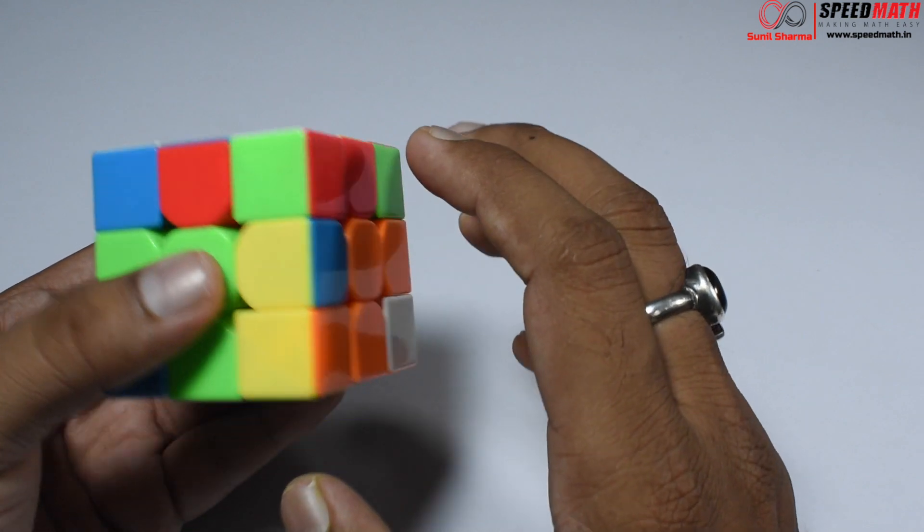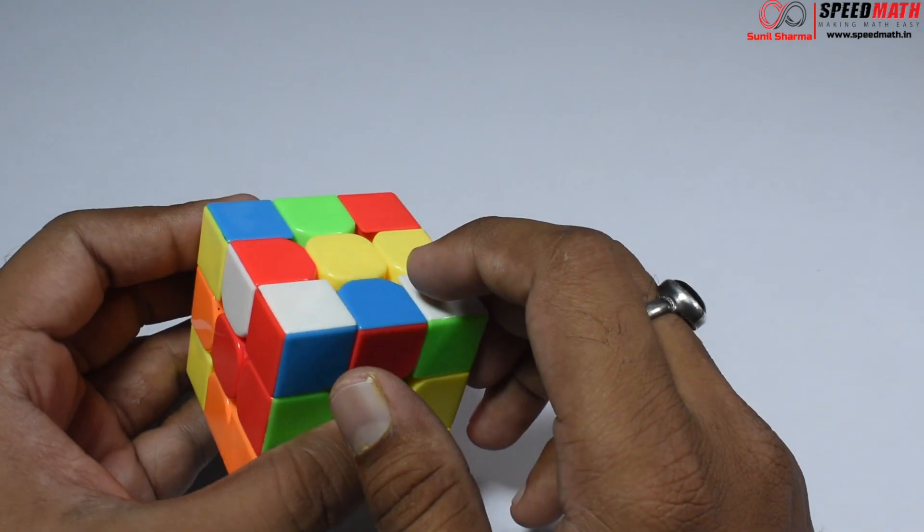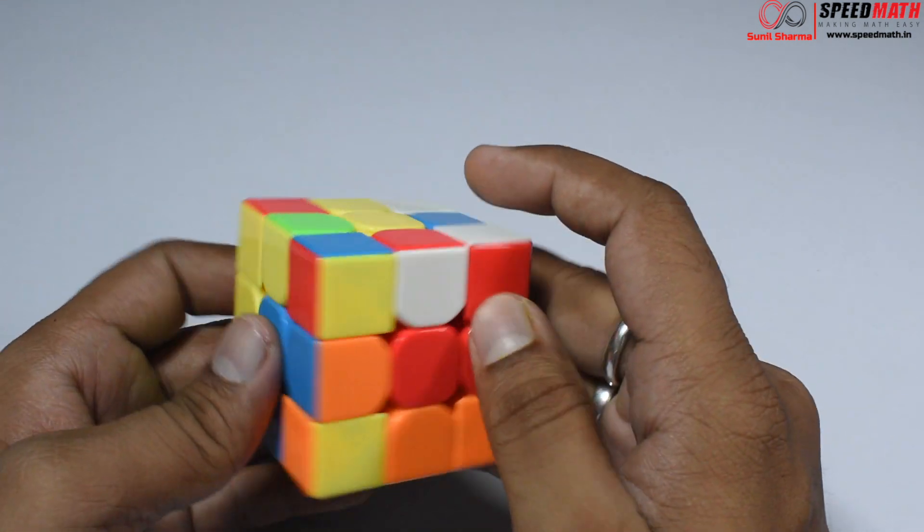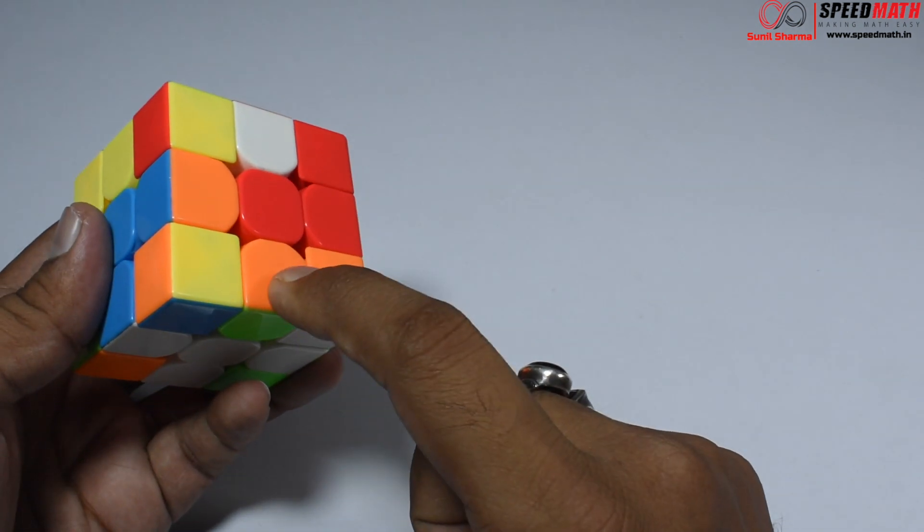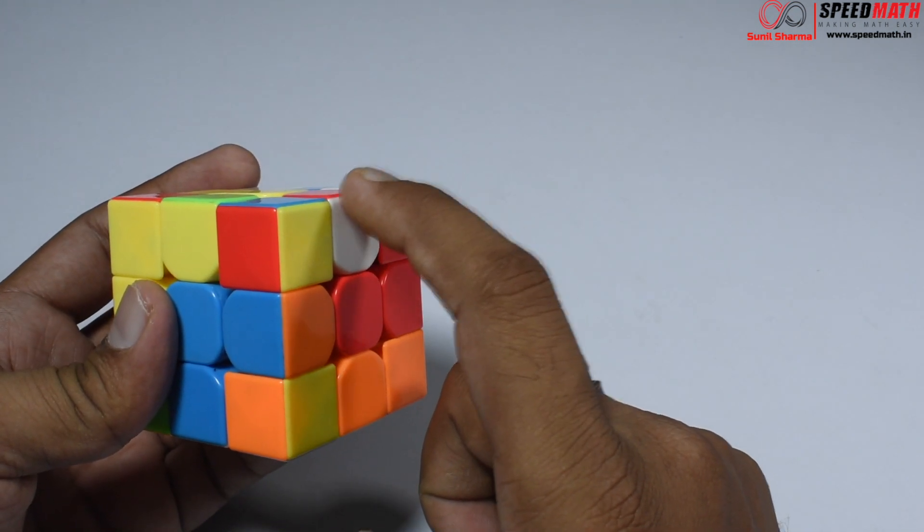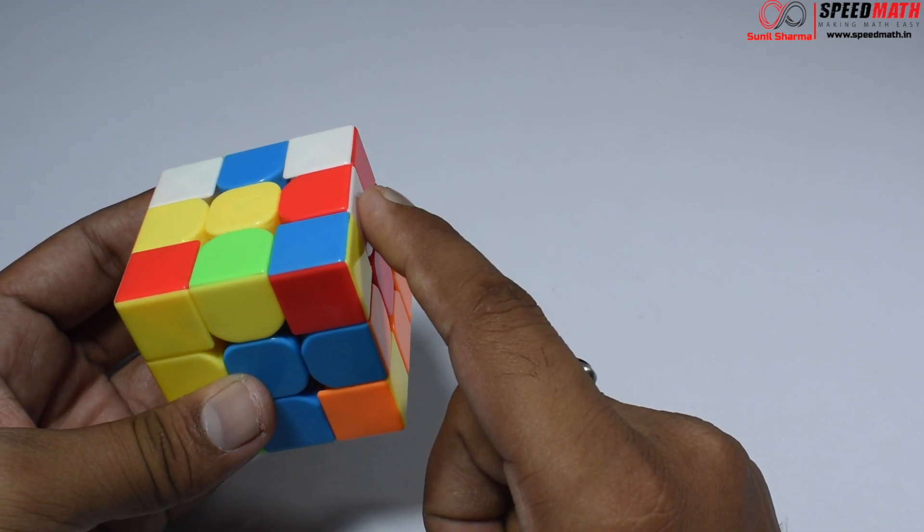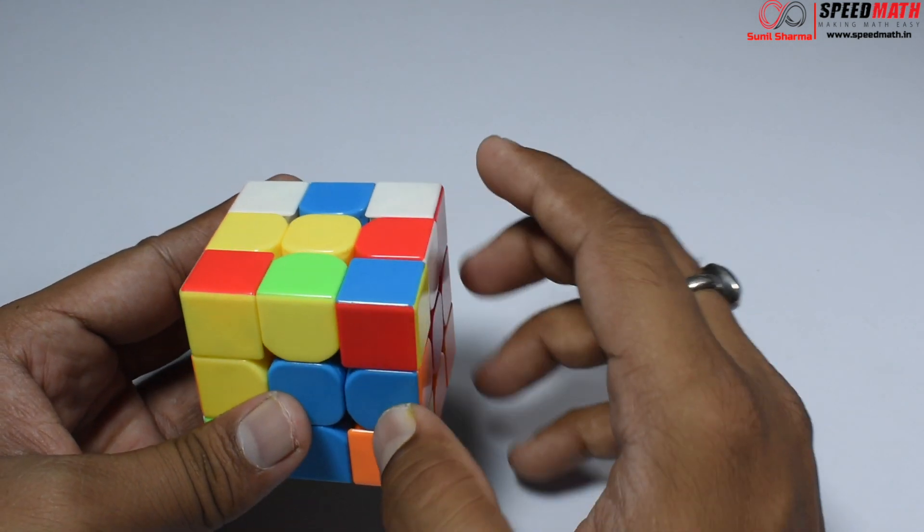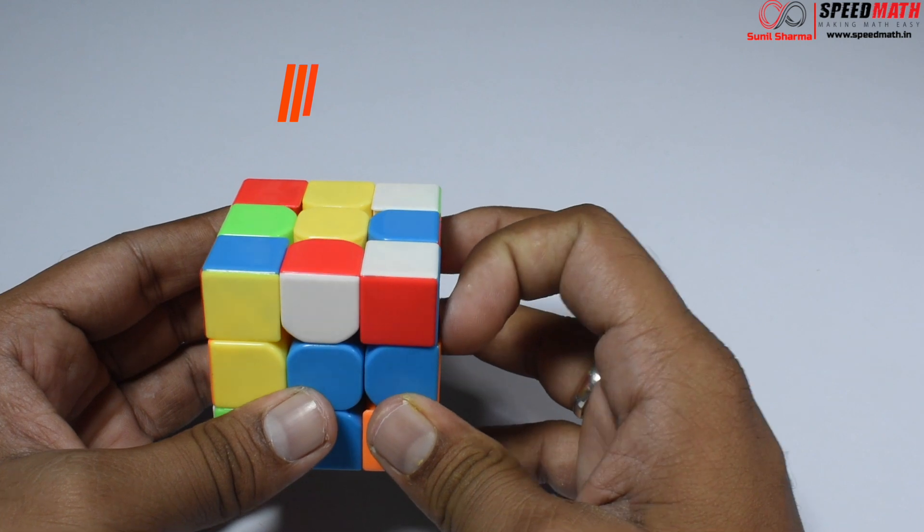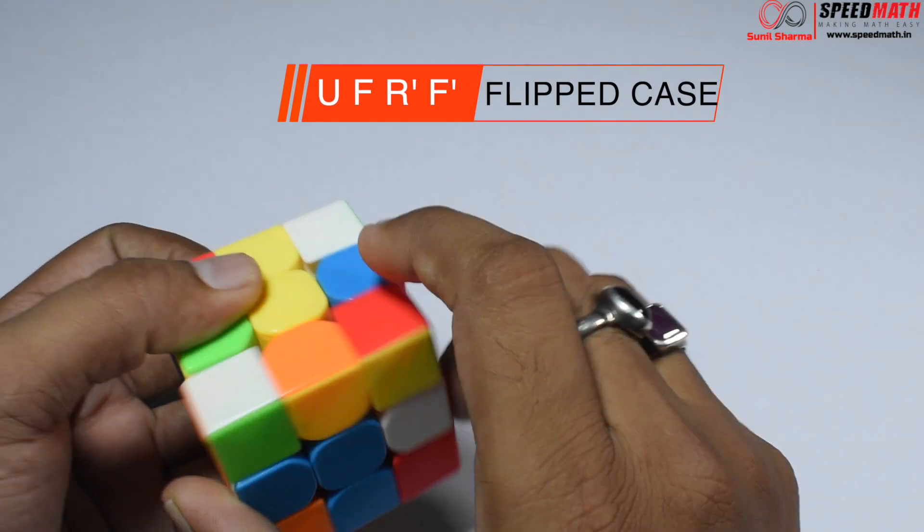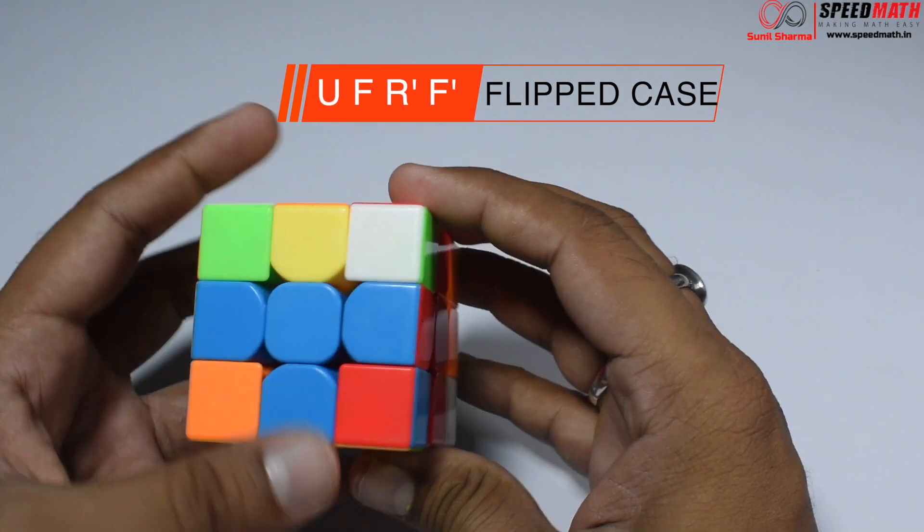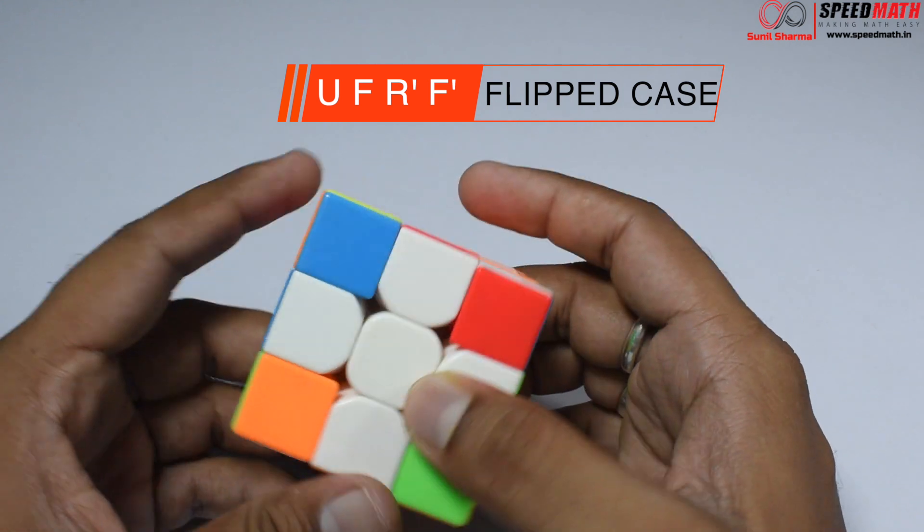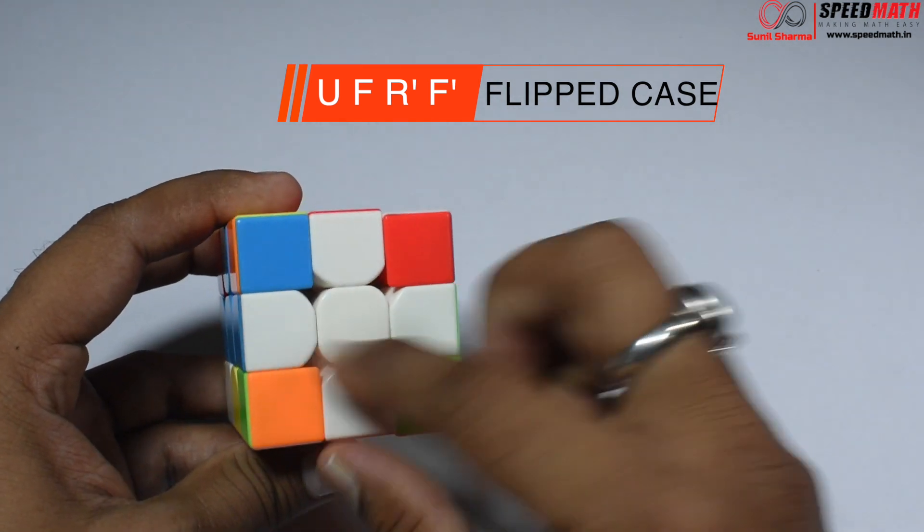I want this piece here. It's exactly opposite and white color is on the side, not on top - it's a flip case. The algorithm is U F R I F I. Look at this, we have a beautiful cross.